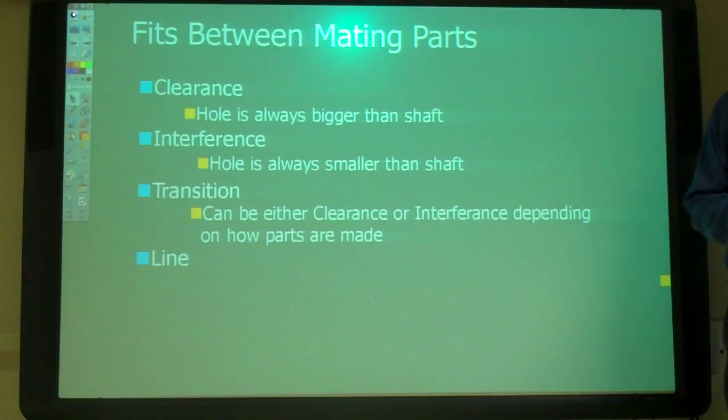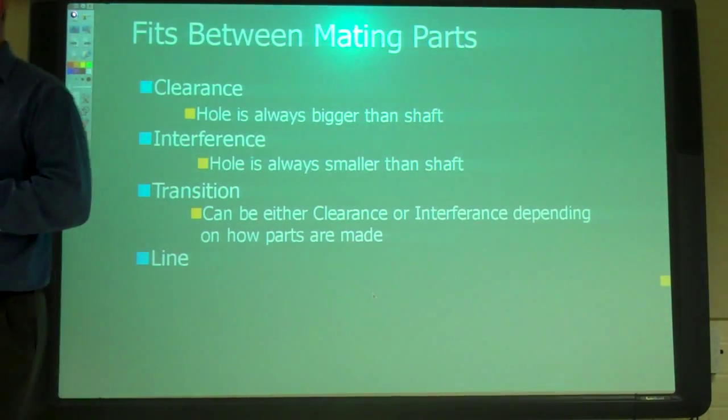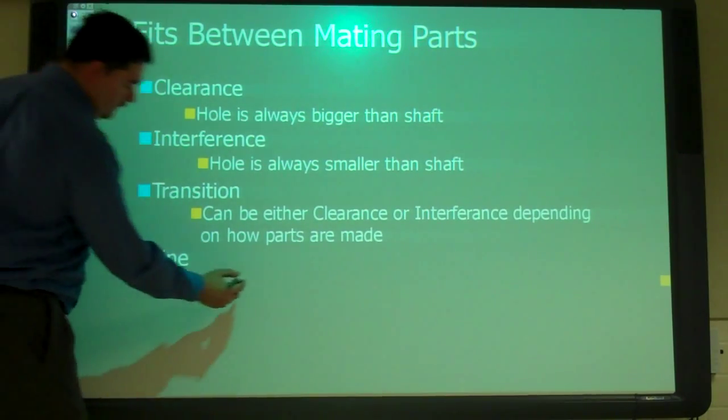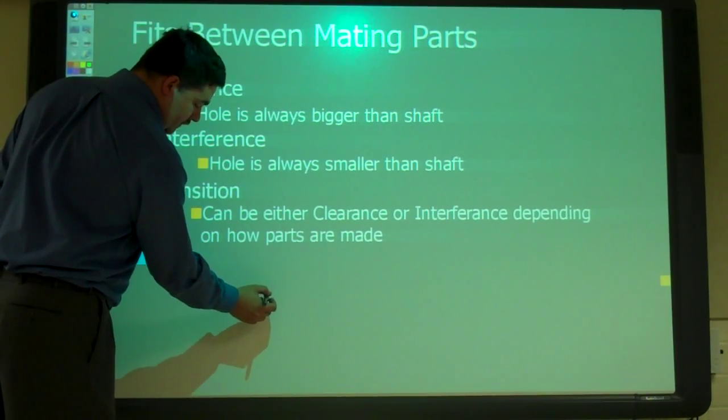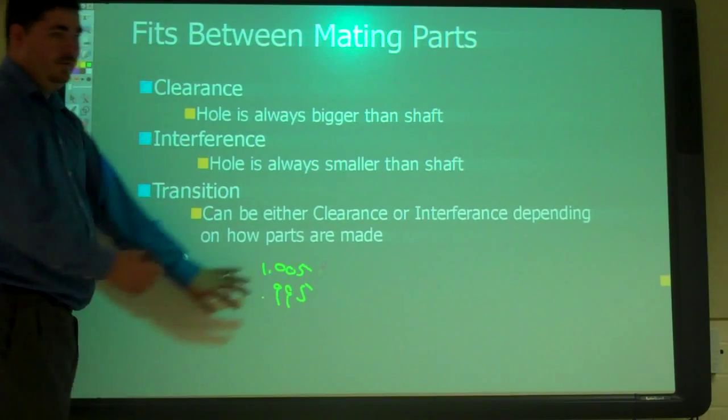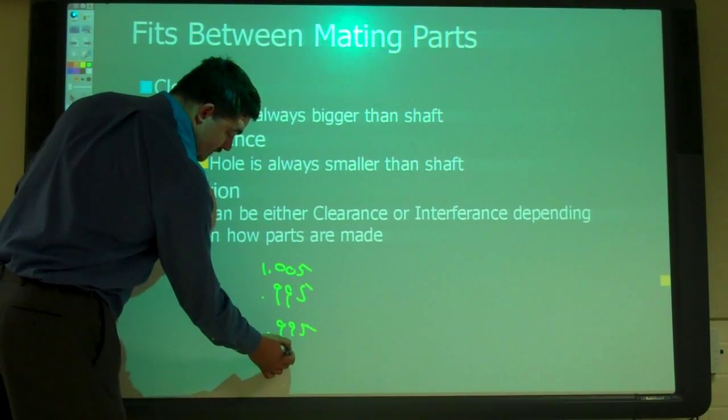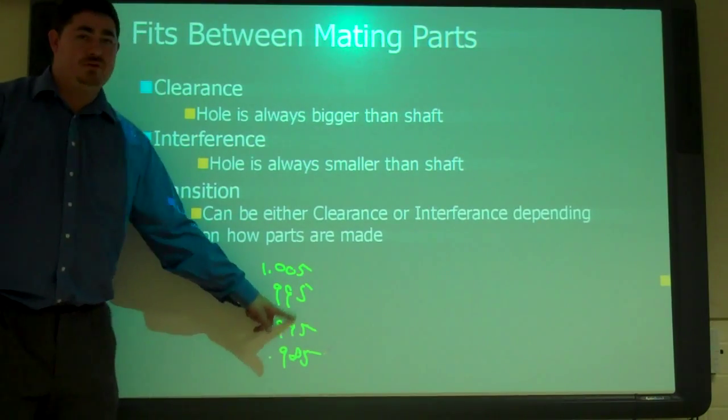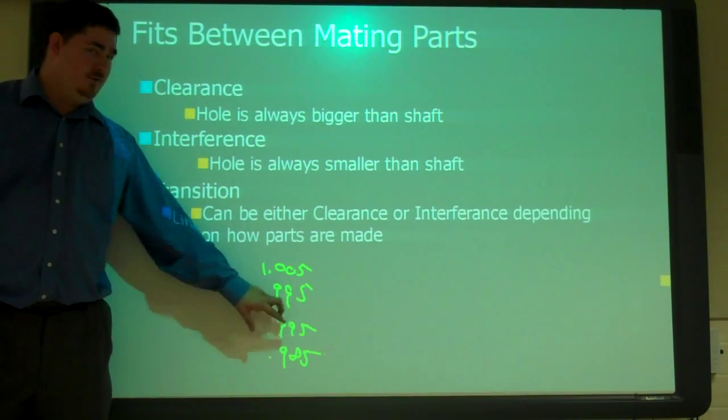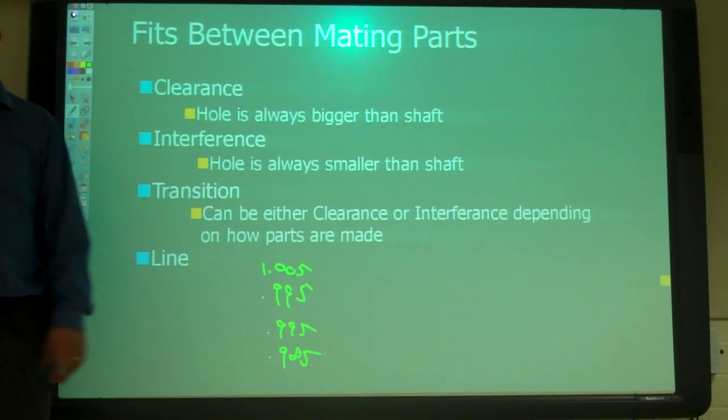And then we have transition fits which can be either clearance or interference depending on where it is. So the sizes kind of overlap and I've got a chart on the next page that I'll kind of show this. And then we have line fits where it's exact same size. So like on a line fit it might be 0.995 to 1.0. So that's the hole size and the shaft size would be 0.995 to 1.0. So the one number is in common. So the smallest of one is the same as the biggest number on the other one. That's a line fit. So at the worst case scenario it's a perfect fit between them. But other than that it's a clearance fit. Okay.